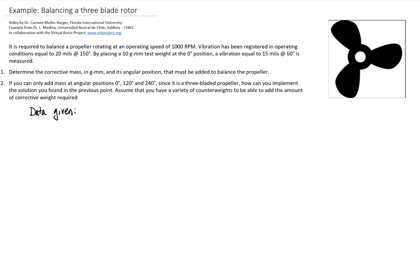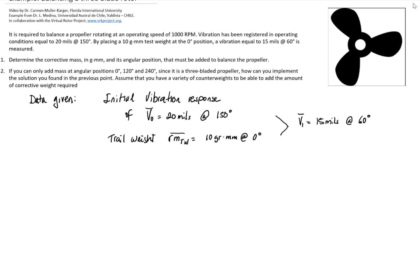So, after the data given, we have the initial vibration response of 20 mL at 150 degrees, and then we have a trail weight of 10 gram millimeters at 0 degrees that produced a second run amplitude of 15 mL at 60 degrees. Those are all vectors because they have magnitude and direction. Graphically, we can draw an initial vector of 20 mL at 150 degrees and a second vector of 15 mL at 60 degrees.